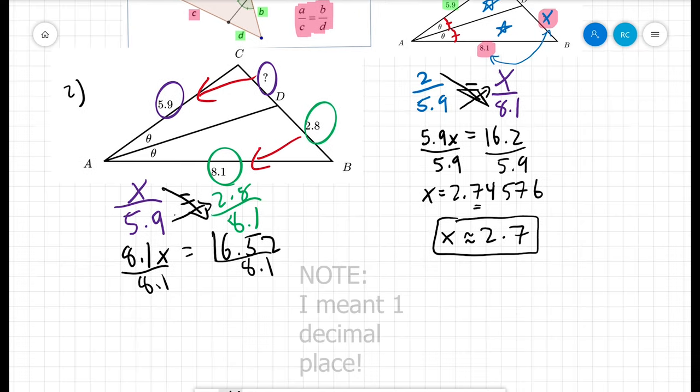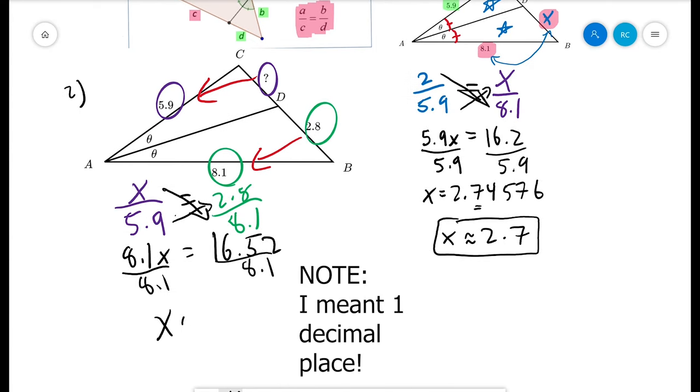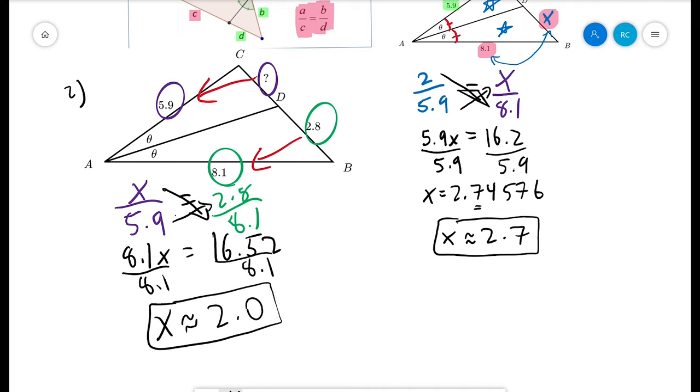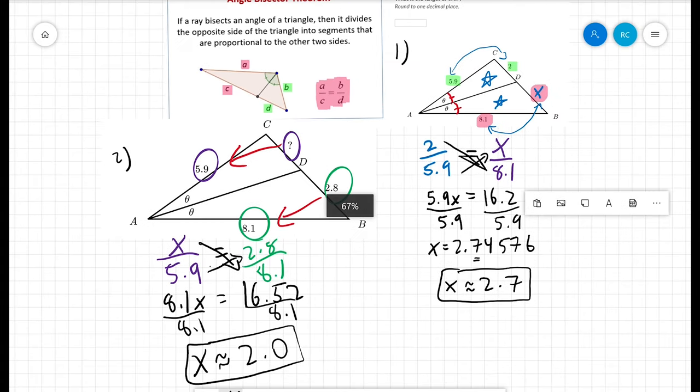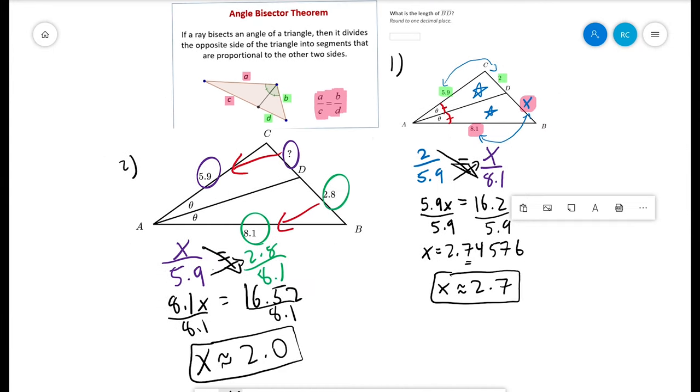Now, again, we're rounding to two decimal points, so we're going to say x is approximately equal to 2.0. Let's see if that's the right answer. It is.